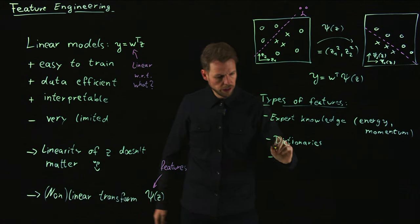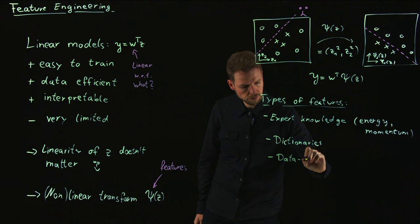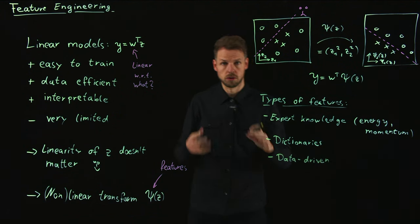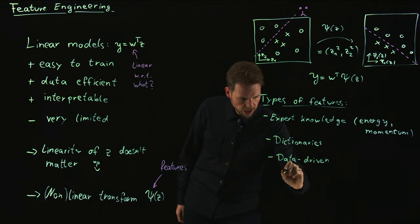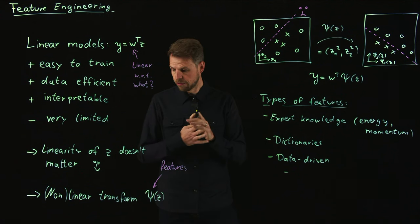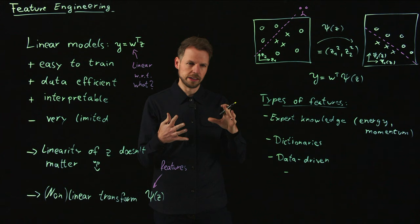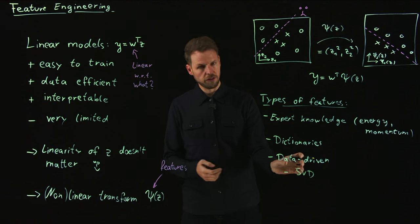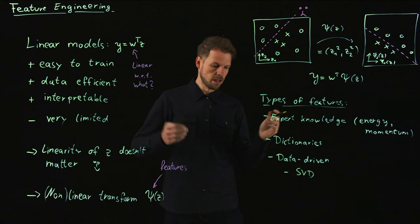What you can also do is you can try a data-driven identification. Collect data and identify features automatically. You can do so in a linear fashion. You can also do the Psi in a linear form. What we have seen already, the singular value decomposition, is for instance a way to find these singular vectors and express your data in terms of these basis functions, which are then features.